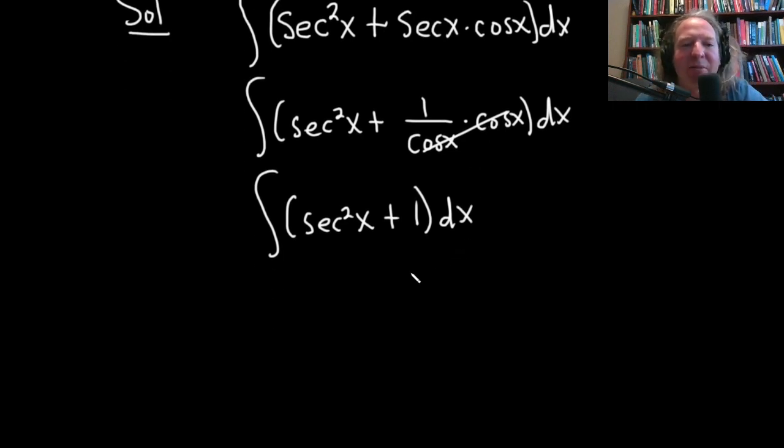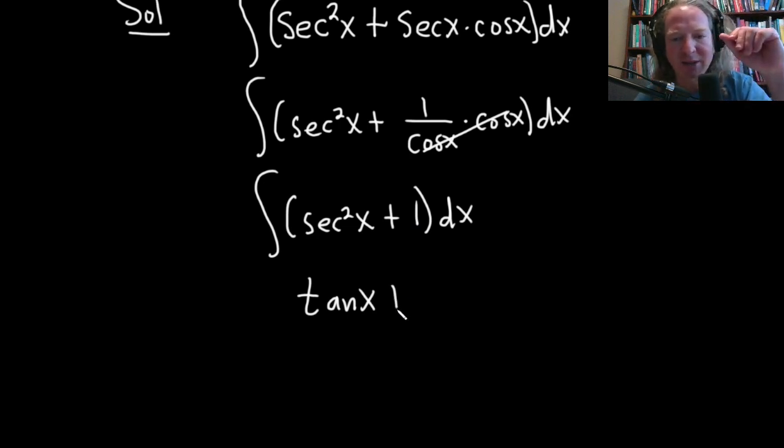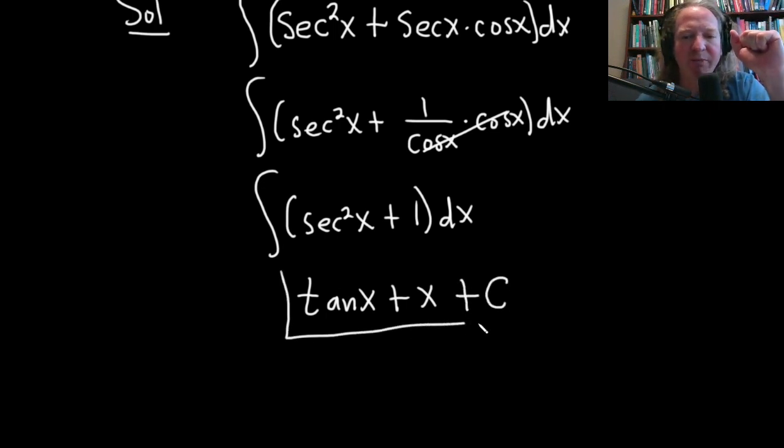So now we're integrating. So let's think backwards again. What's a function whose derivative is secant squared? Well, tan x, right? The derivative of tangent is secant squared. And to integrate 1, since it's a constant by itself, you just tack on an x. So it's just x. And it's not quite right yet. We still need our constant of integration, capital C. That would be a perfectly acceptable answer to this problem.